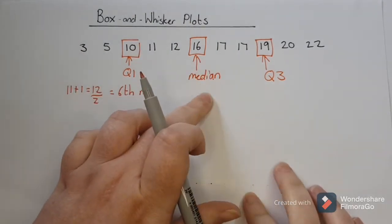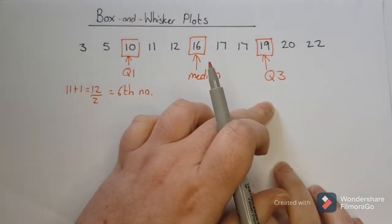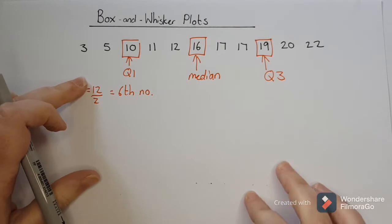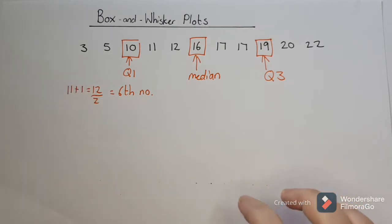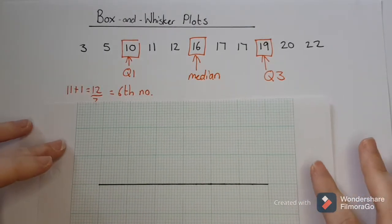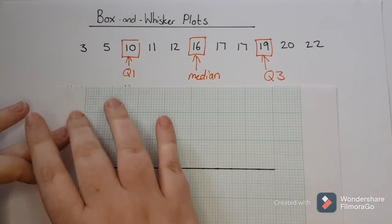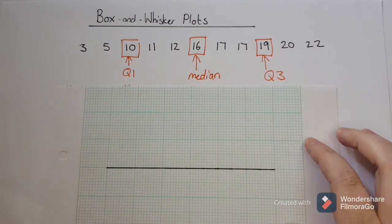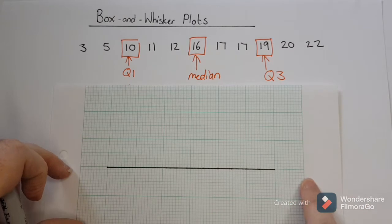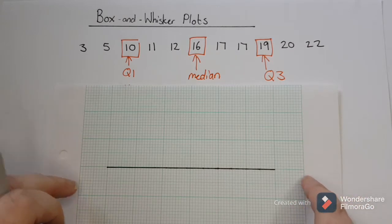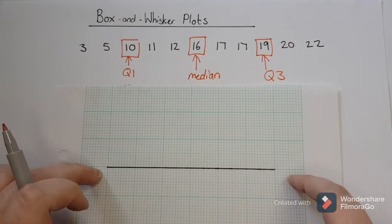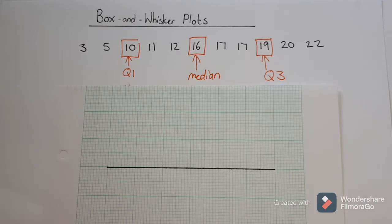So now I have a median, lower quartile, upper quartile, and the whole data set, so I can start drawing a box and whisker. For a box and whisker you're always going to get graph paper or some form of grid. The first thing you're going to do is draw a ruler line for your scale. It doesn't have to touch end to end, and it also does not have to start at zero. Depending on what data set you have, you draw your scale accordingly.